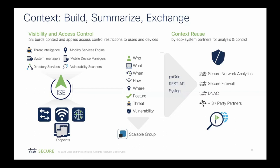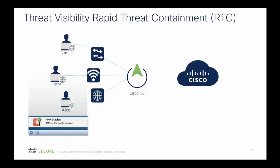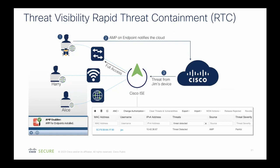For third-party partner scenarios, consider our trusted employee Jim who gets full access to the network. At some point he downloads an infected PDF and gets a payload downloaded. But AMP is able to detect that — it's detonated in the sandbox in the cloud — and the operator can trigger Adaptive Network Control to quarantine that device. That's how Secure Network Analytics works as well.